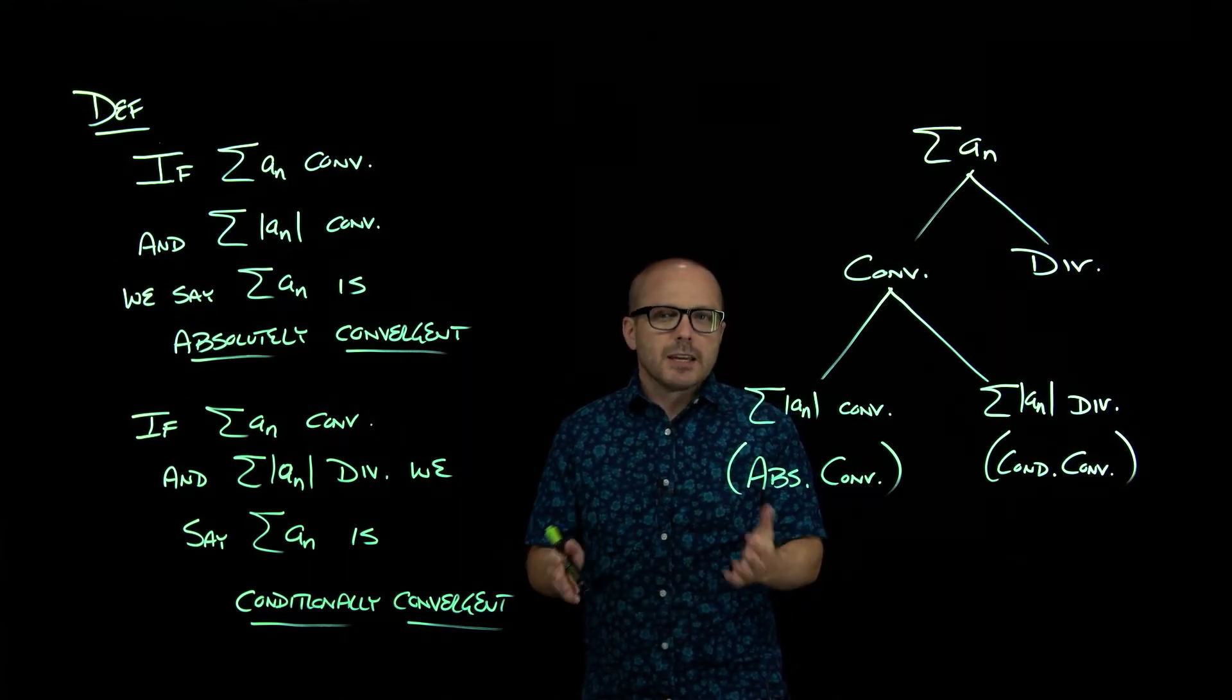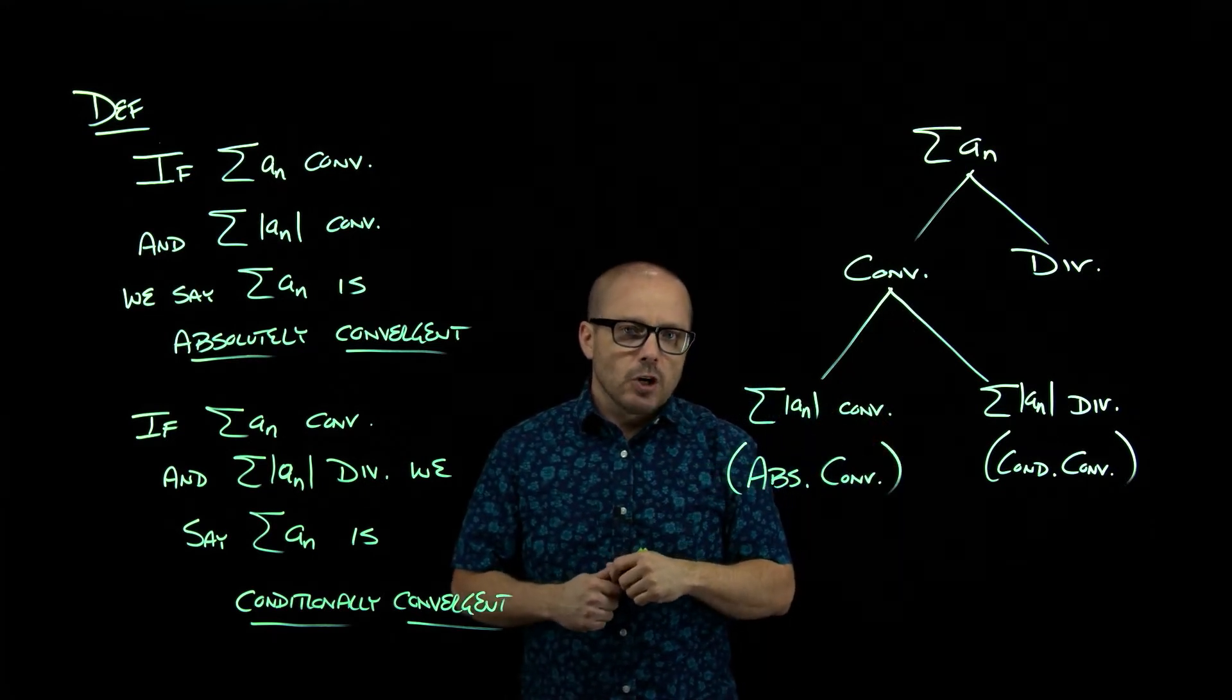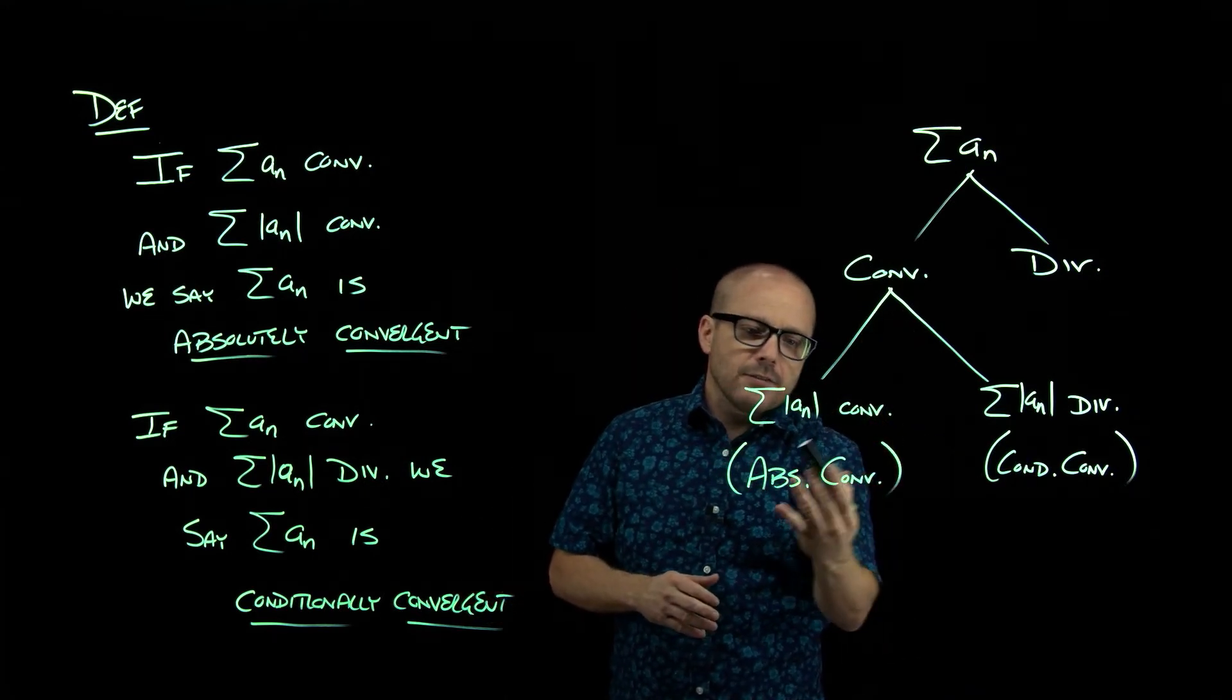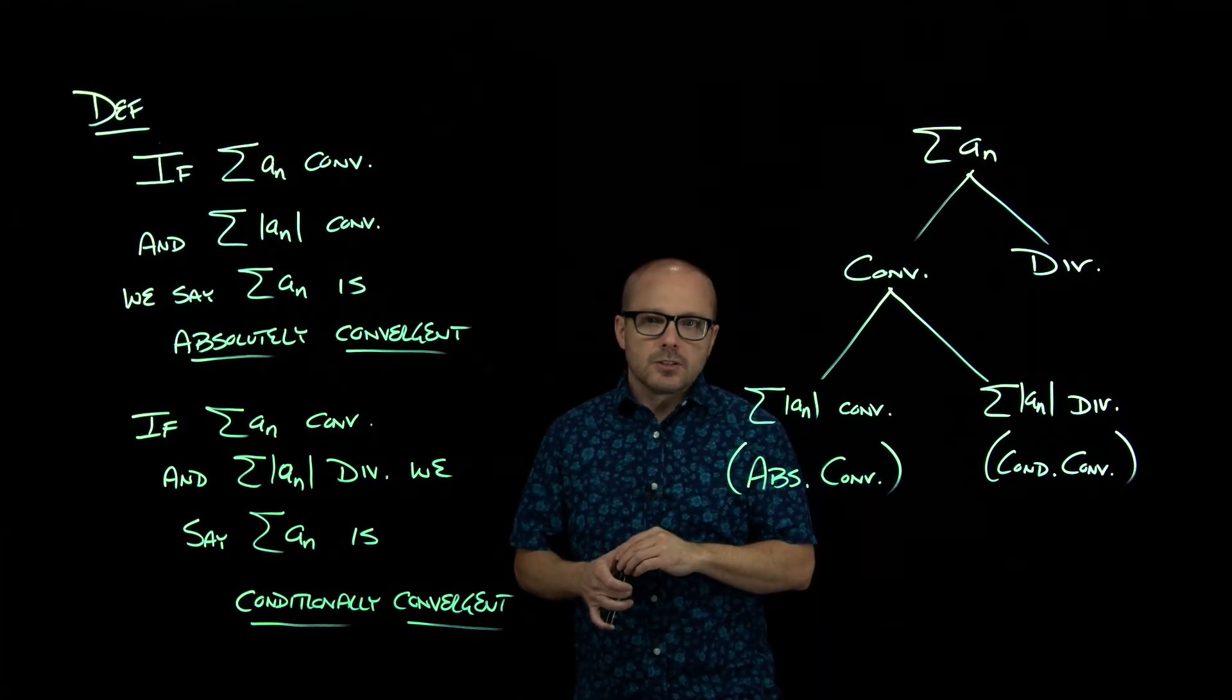So when we're looking at alternating series, you're going to be asked not only does the series converge, but also classify whether it's absolute or conditional.